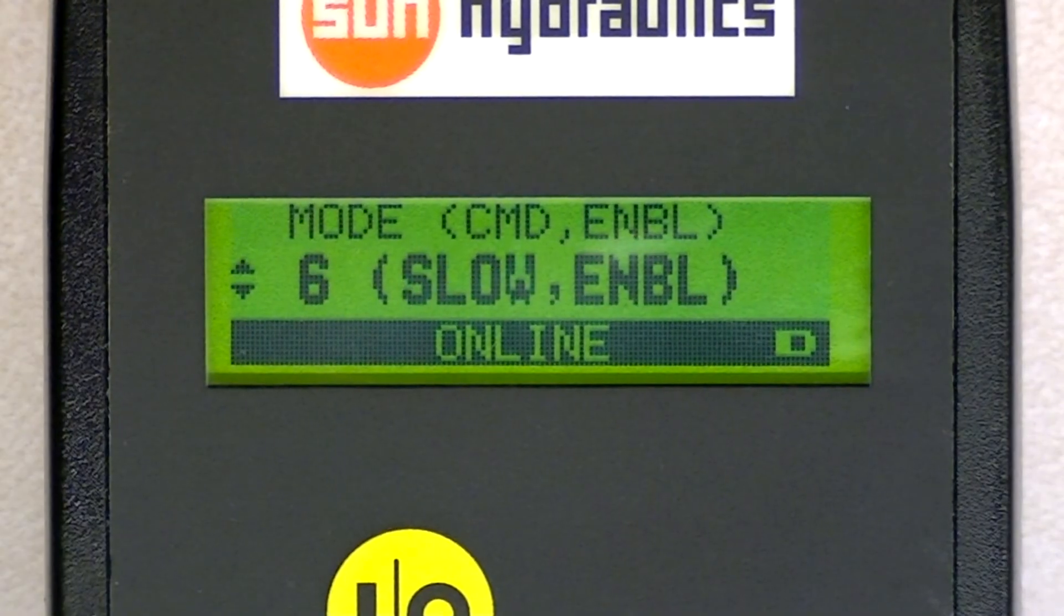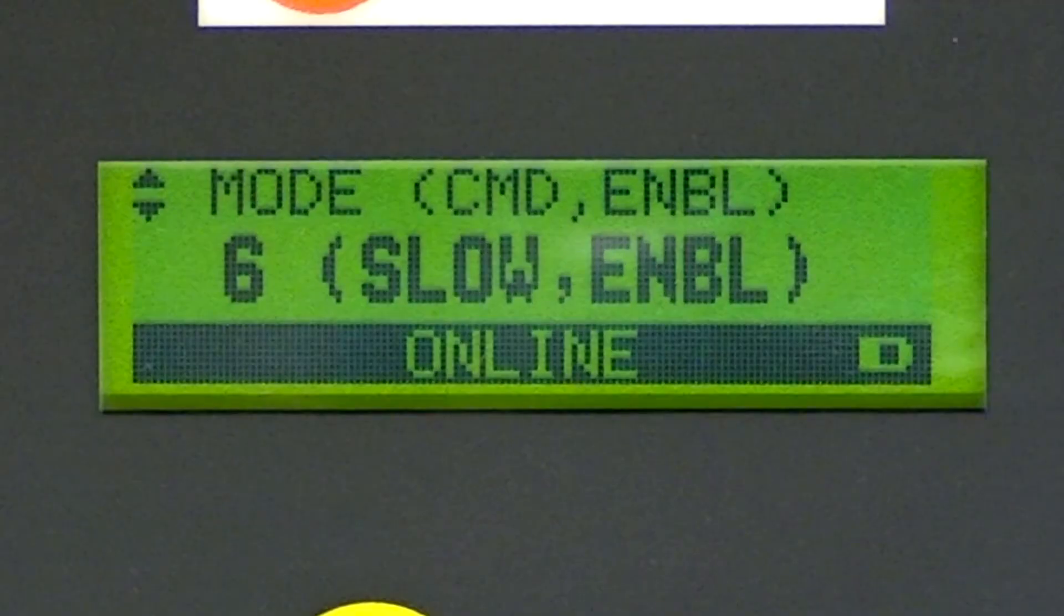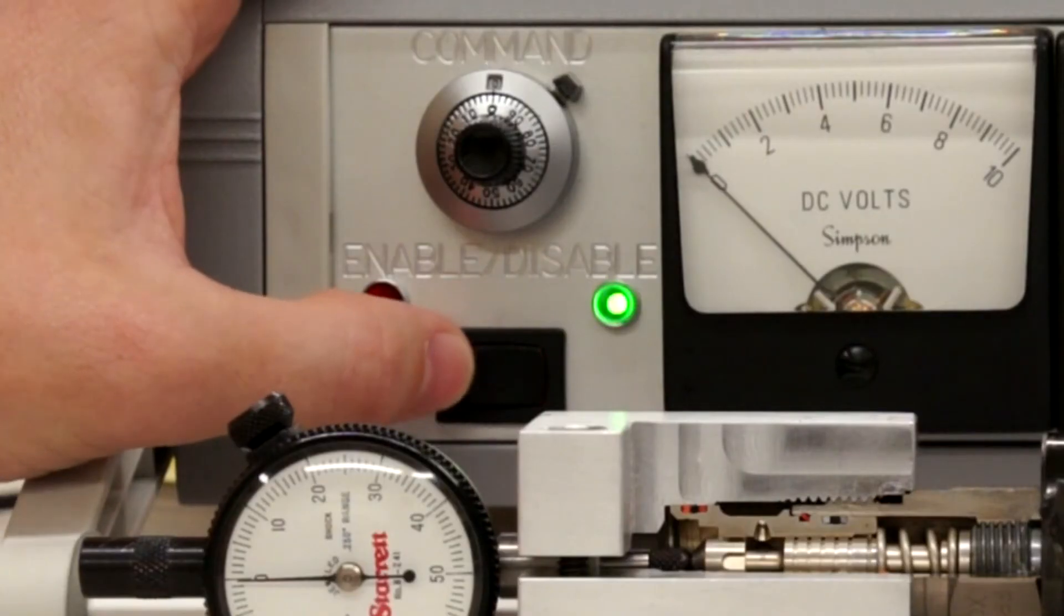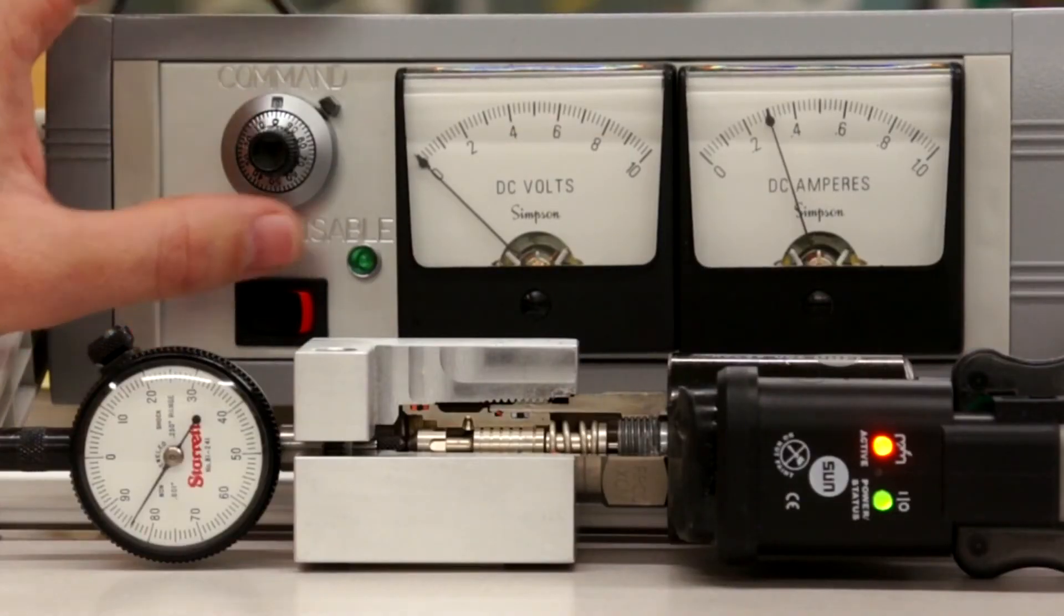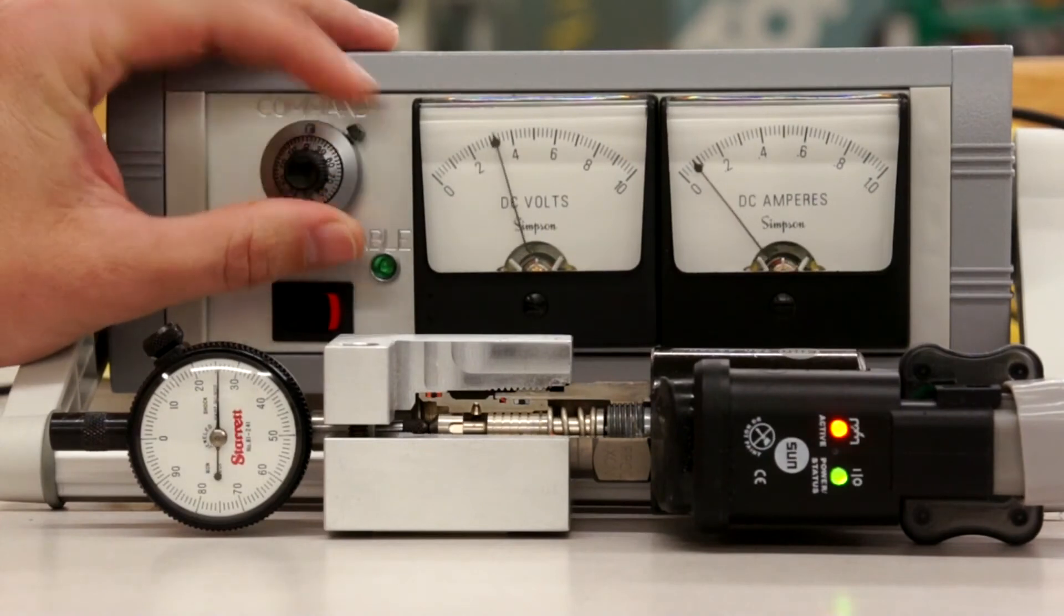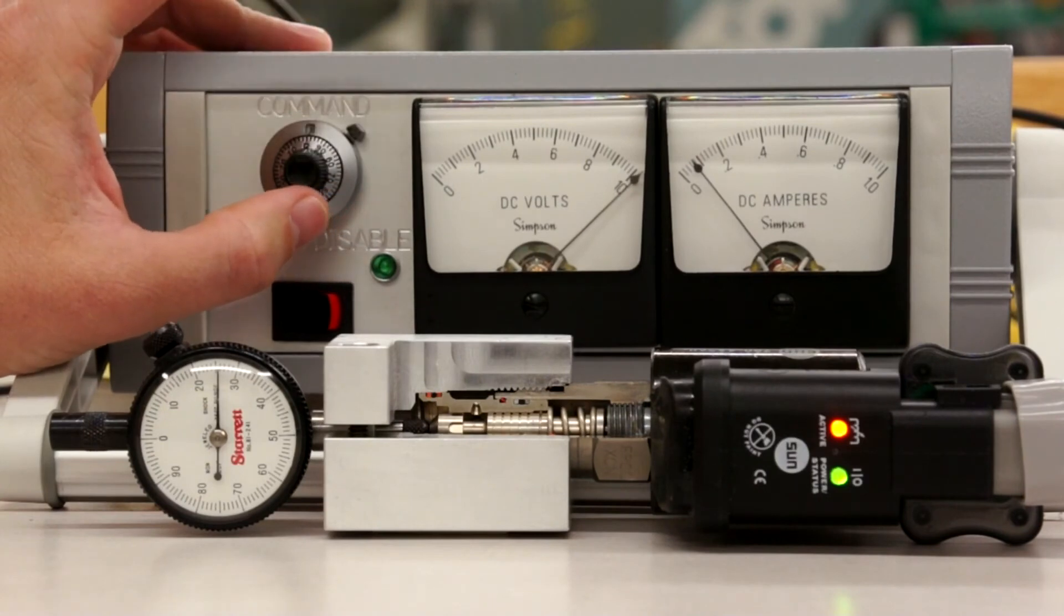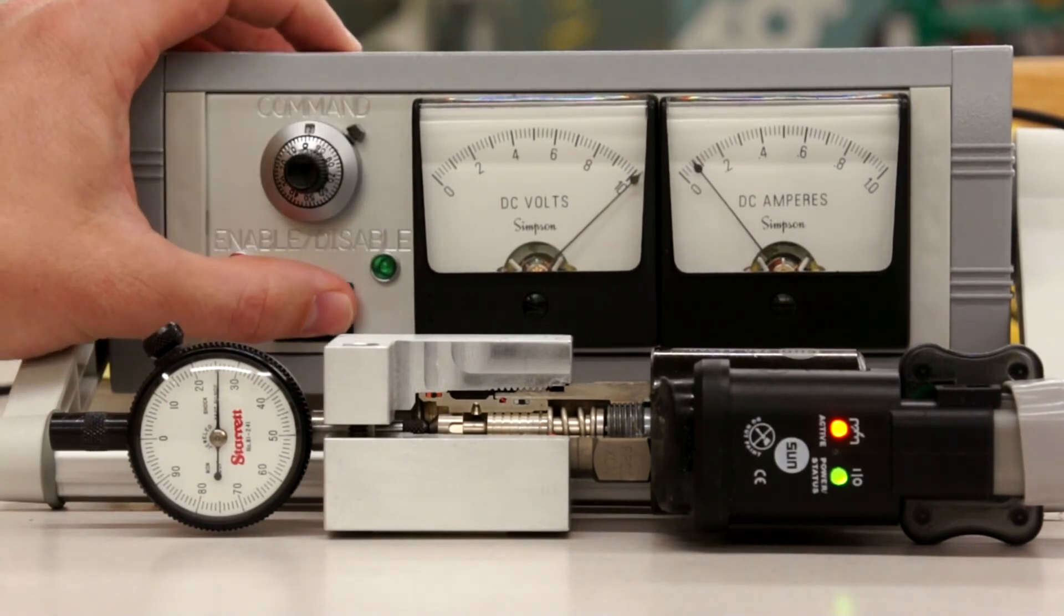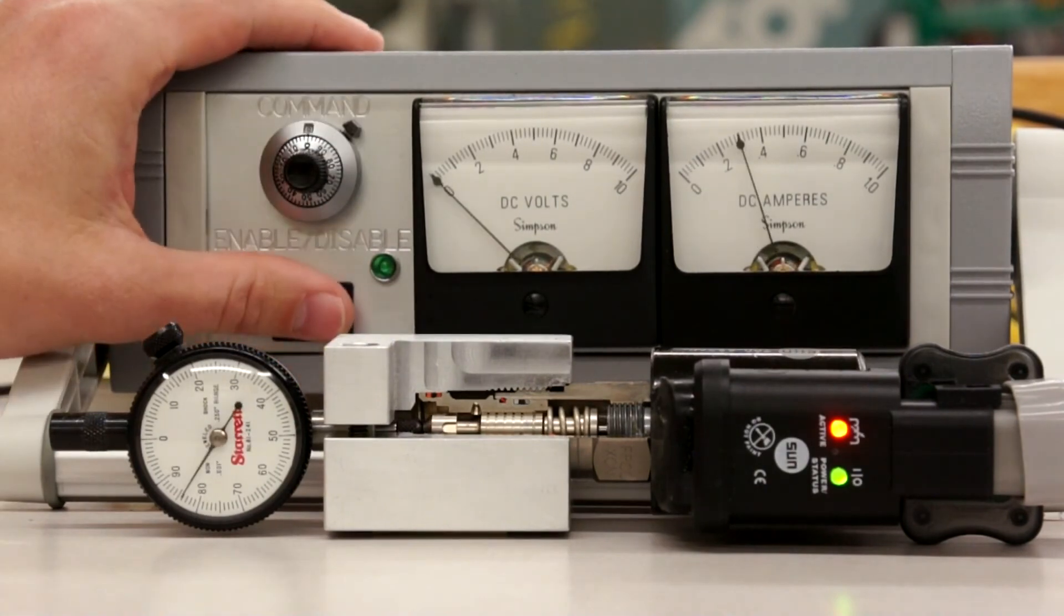Mode 6 is the same as mode 5, except it is inversed. Mode 6 is called slow, with an enable function. Turning on the enable gives you maximum output current, whereas in mode 5, it gave you minimum output current. The full command threshold is now from 2 to 10 volts, which gives you minimum output current. The 3 speeds again are off, minimum output current, and maximum output current.